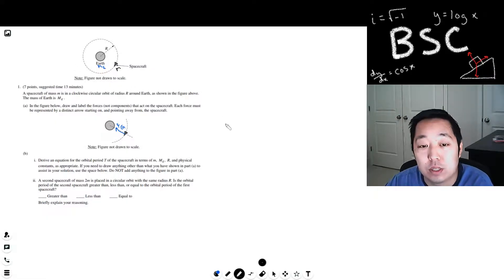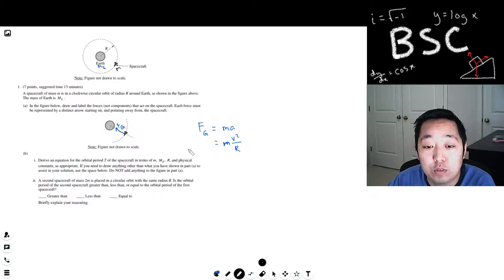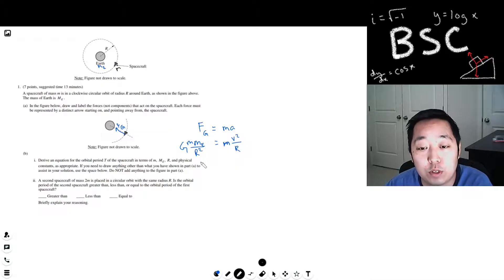Circular path means centripetal acceleration. So FG has to equal MA where A is the centripetal acceleration which is MV squared over R. Now the force of gravity is given by GM1M2, so M1 would be the mass of the spacecraft then the mass of the Earth over R squared. So this is the equation that governs the relationship between the force of gravity and the centripetal acceleration. But we need to get this in terms of period.